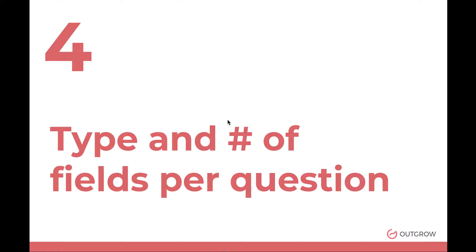Generally speaking, three to eight questions is a sweet spot. If you go beyond eight, the calculator has to be extremely useful and relevant for someone to keep going. For number of fields within a question, two to four is generally good. Once you go beyond six fields, especially on mobile, users are scrolling to reach all the fields. So try to keep the number of fields low and the type to single-select or radio button.